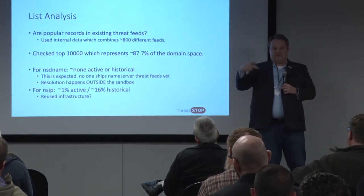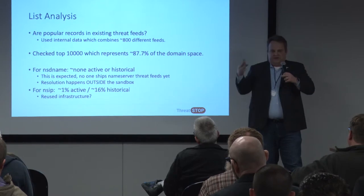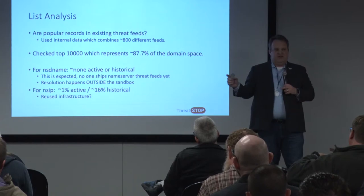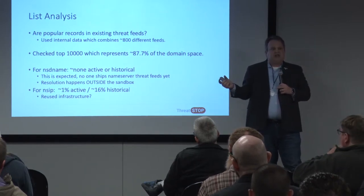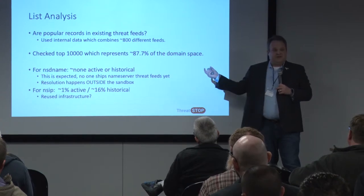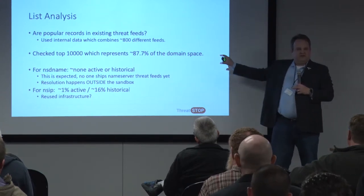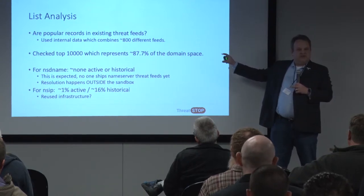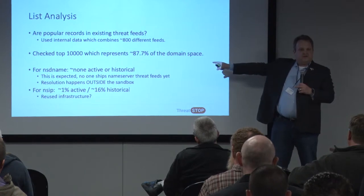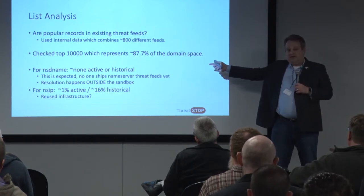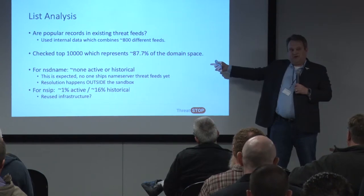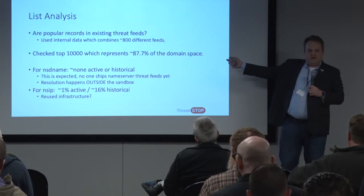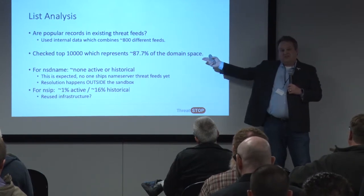I used ThreatStop's internal data, because that's what I had with all the various feeds aggregated in one place. I started with only the top 10,000 records, which represented a little less than 90% of all domains on the internet, which I think is interesting. Talk about radical centralization — 340 million some-odd domains are controlled by just 10,000 servers. And every domain has at least two name servers, sometimes up to four. So you're really talking about 5,000 entities that control the internet as far as the internet's concerned. I didn't expect it to be that centralized.